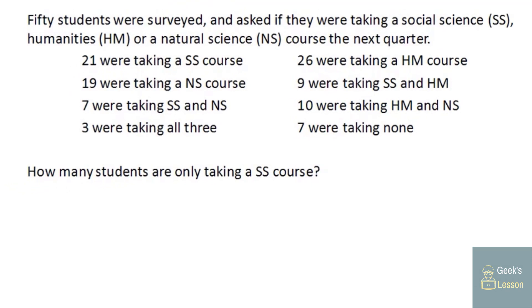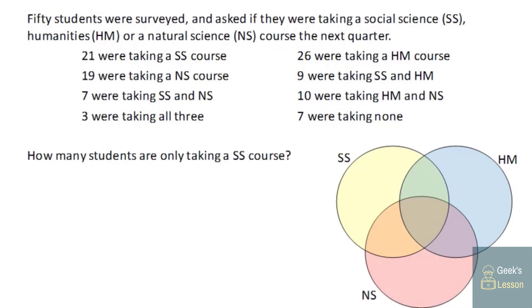So 50 students were surveyed and asked if they were taking a social science, humanities, or natural science course the next quarter. And here are the survey results. And we're wondering how many students are only taking a social science class? Because these 21 who are taking a social science class may have also been taking some others. So to work with this, let's bring in, again, a Venn diagram. This is gonna help us picture what's going on. And we have our universal set here, which we may or may not need to deal with, but go ahead and draw it in. So let's start with the most specific piece of information here.